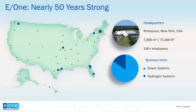Before we dive into the details, I want to take a few minutes to briefly introduce Environment 1, or E1, for those that might not be aware. E1 and pressure sewers have existed for over 50 years. We are a US-based company and our headquarters is in Niskayuna, New York, about two to three hours north of New York City. Our facility is over 75,000 square feet and we have over 140 employees. The facility is the main center for design, engineering, and manufacture of all the equipment. E1 is predominantly involved in pressure sewer systems, and also in the energy sector through the design, engineering, and manufacture of hydrogen systems for power plants. These two industries support critical infrastructure.